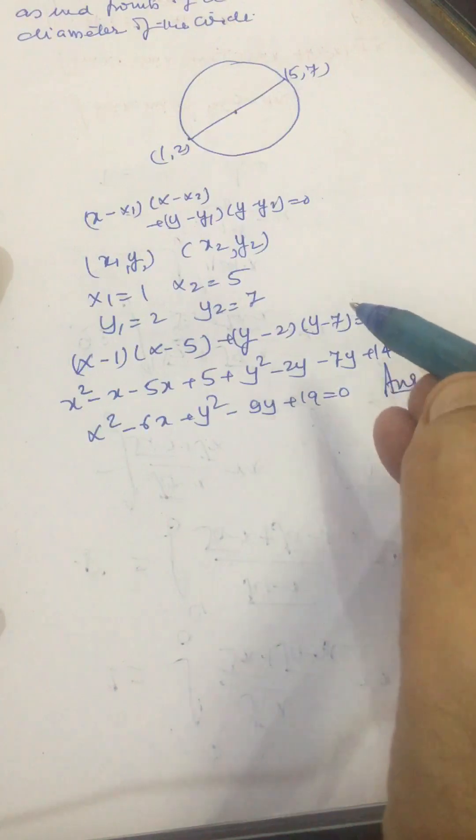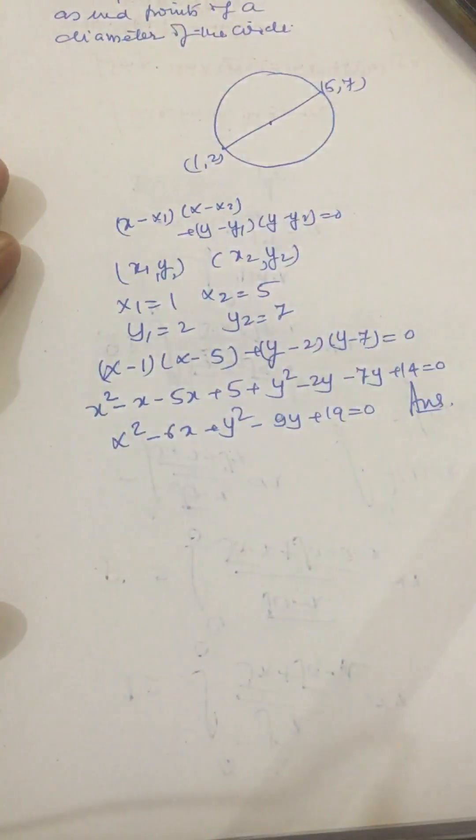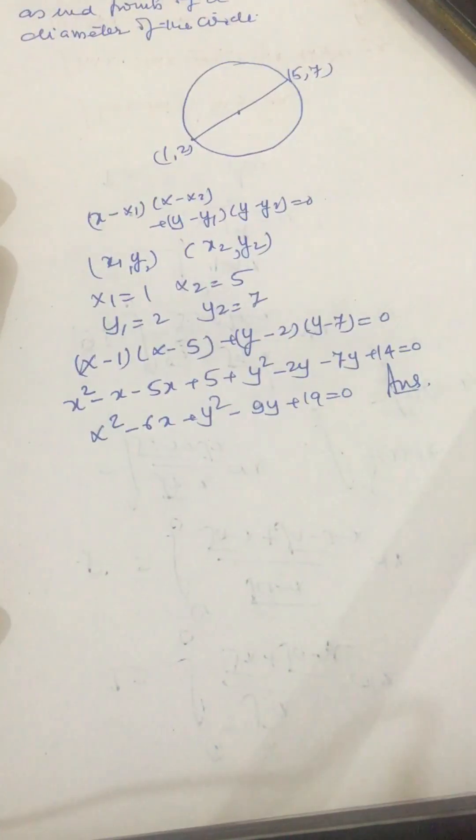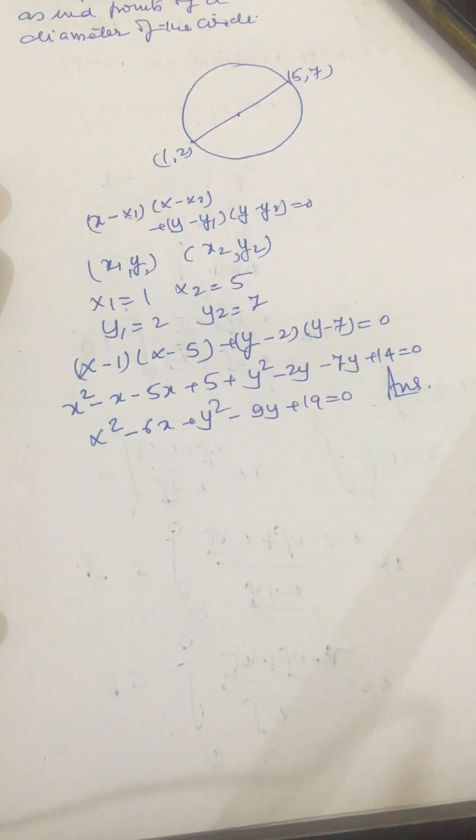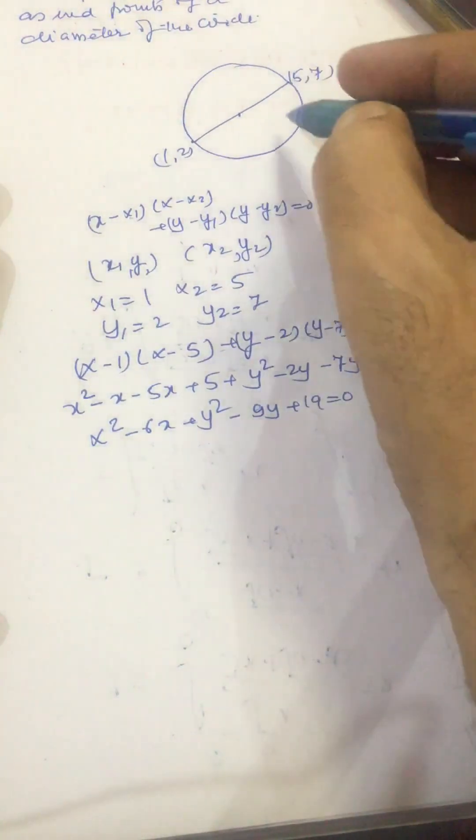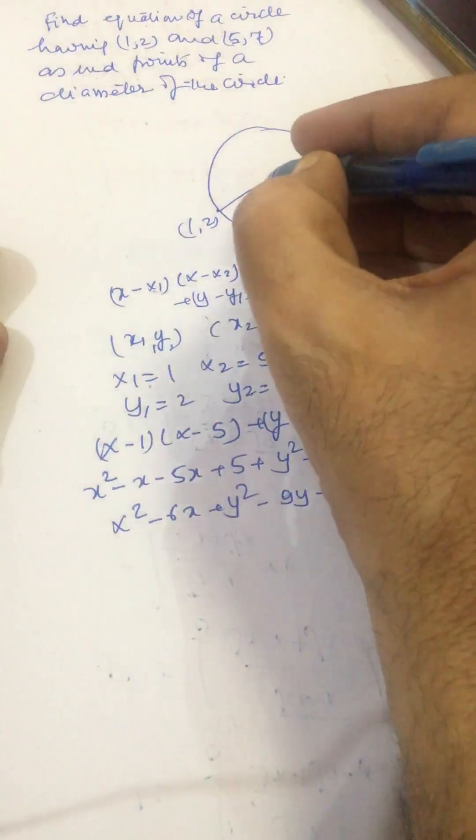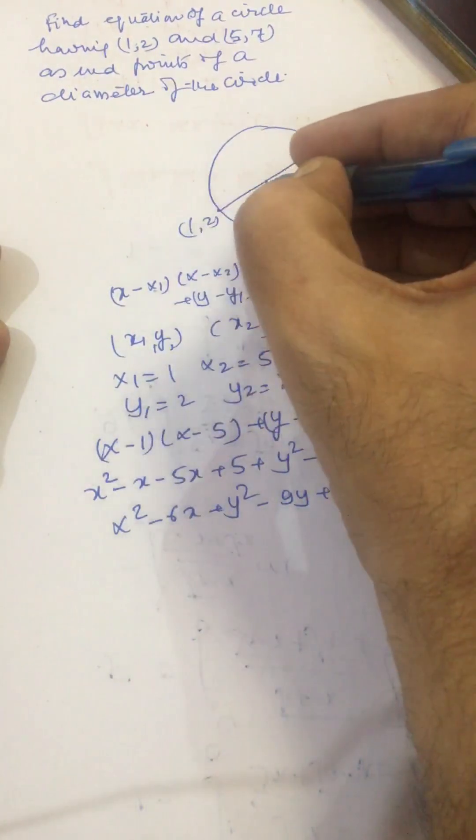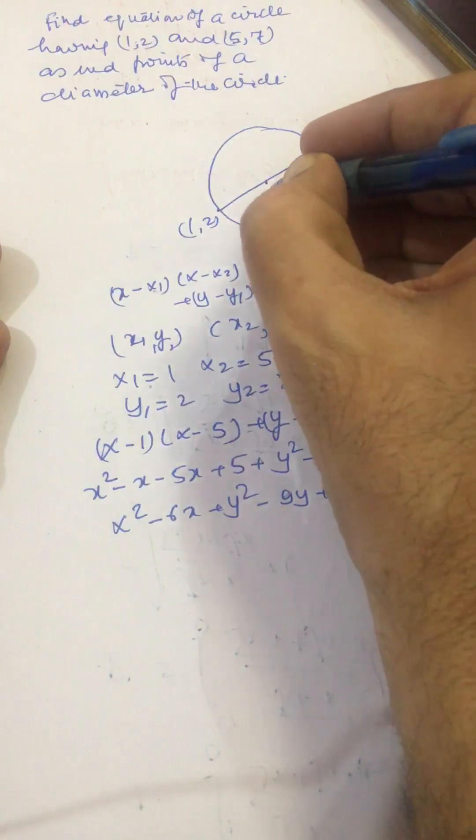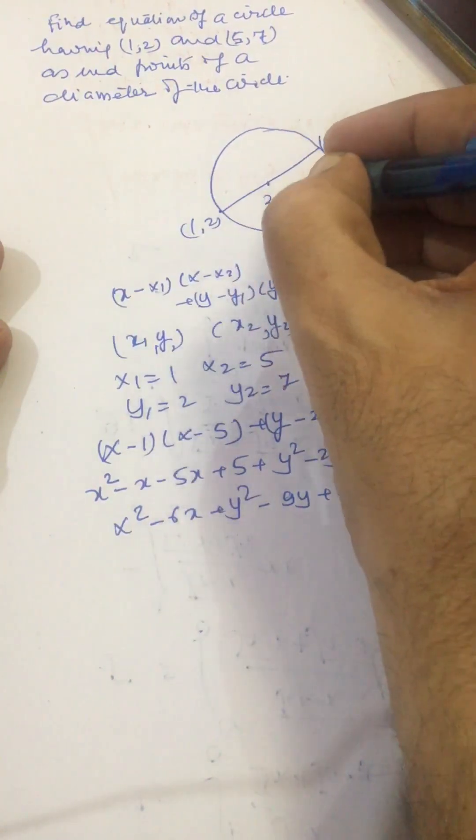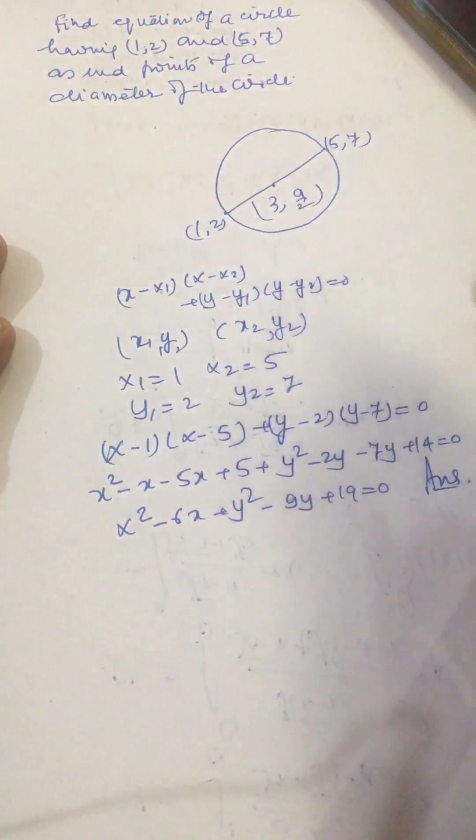Now, another way to find out this circle equation is—see, this center of this circle will be (5+1)/2 = 3 and (7+2)/2 = 9/2.